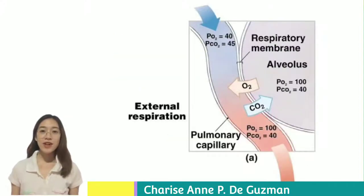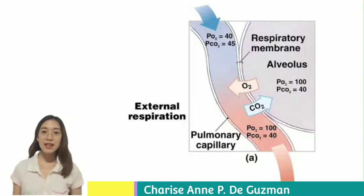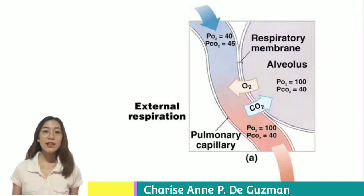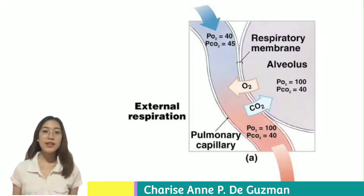External respiration is a process that allows an exchange of gases between the air in the alveoli and the blood traveling through the capillaries. This is possible through a pressure difference between the oxygen and carbon dioxide in the air and in the blood. As a result, oxygen from the air is transferred to the blood, while carbon dioxide from the blood enters the air.